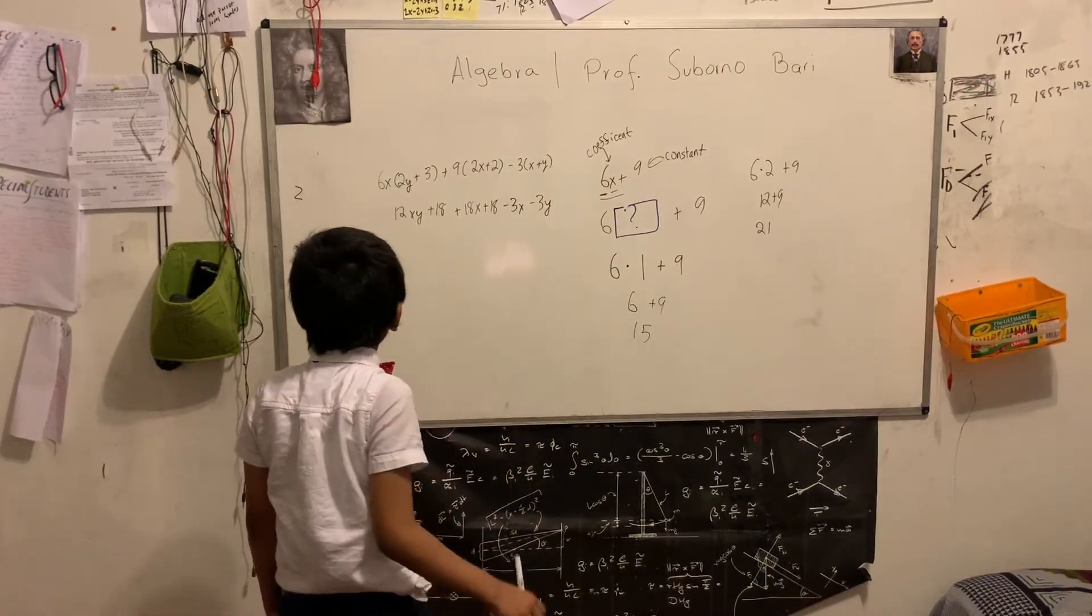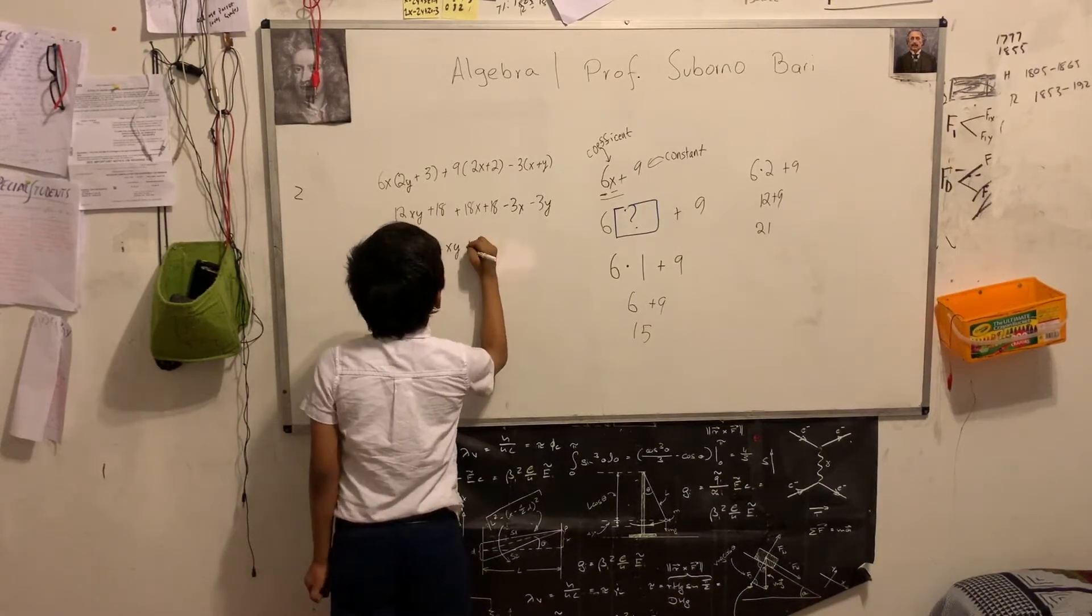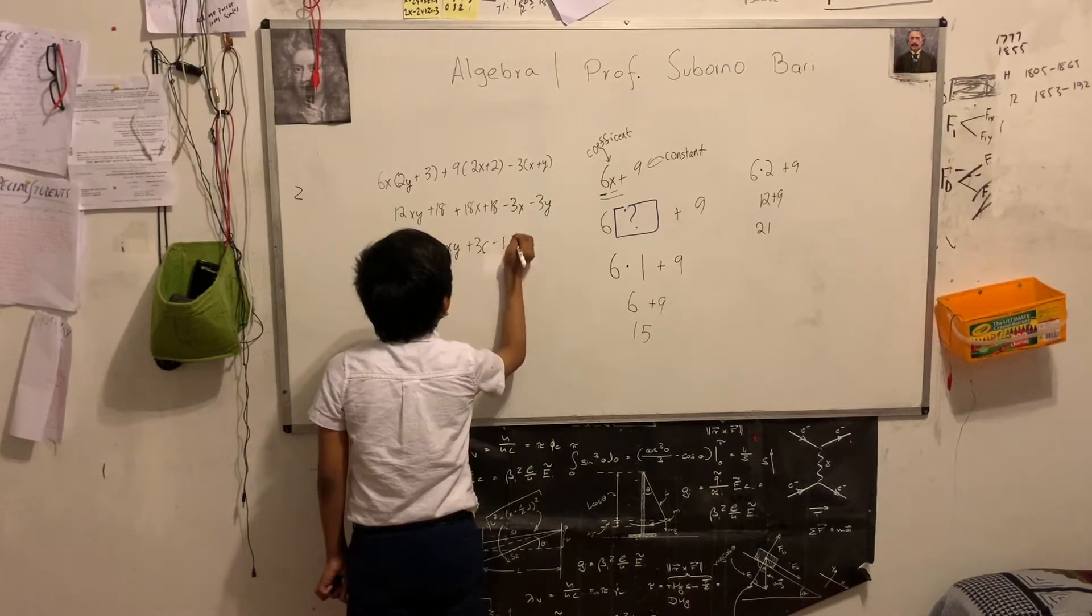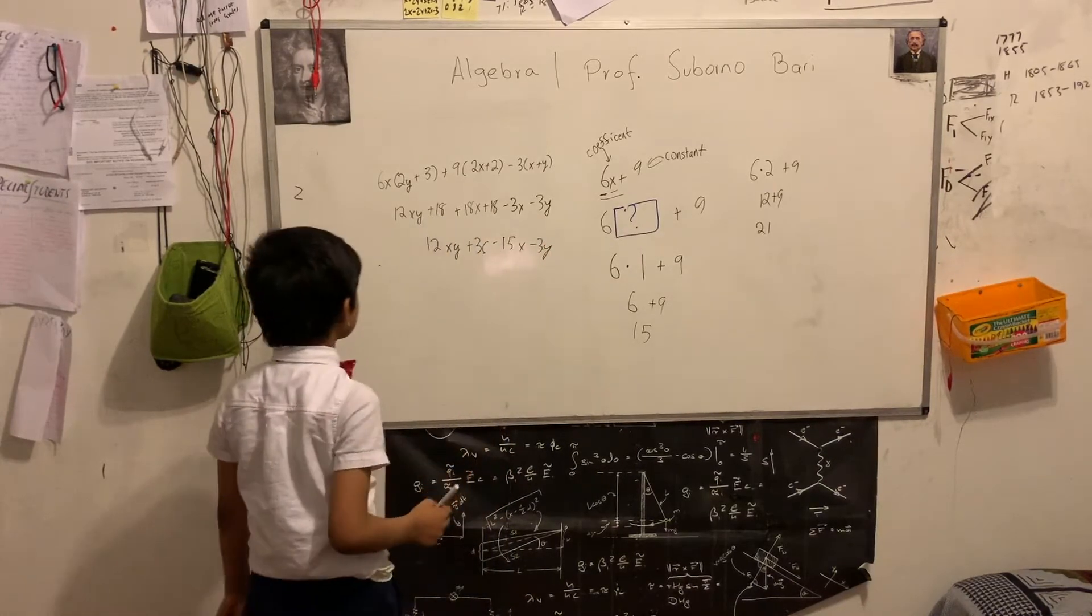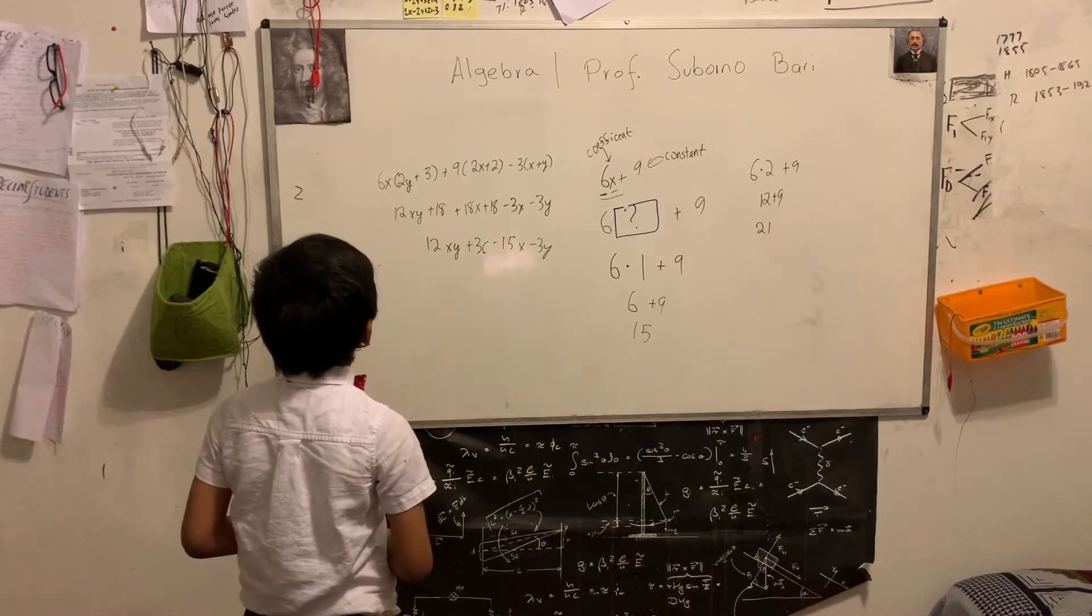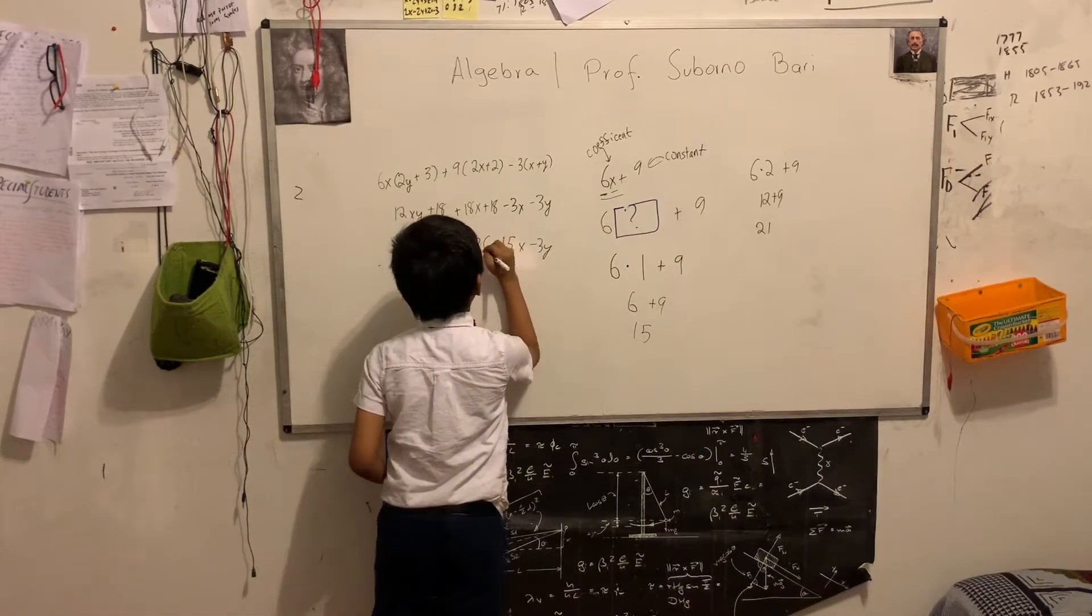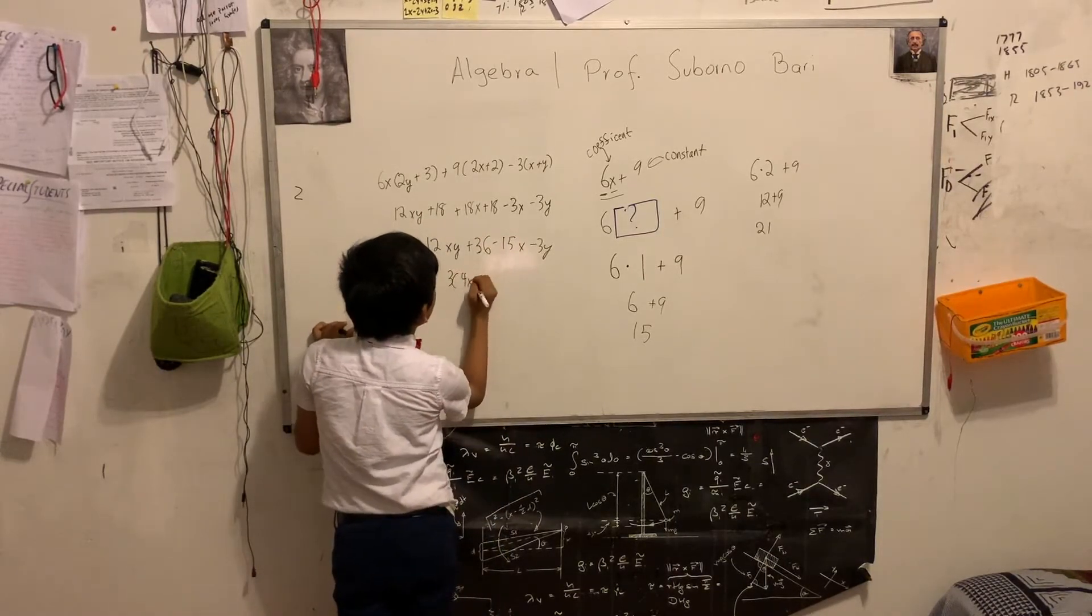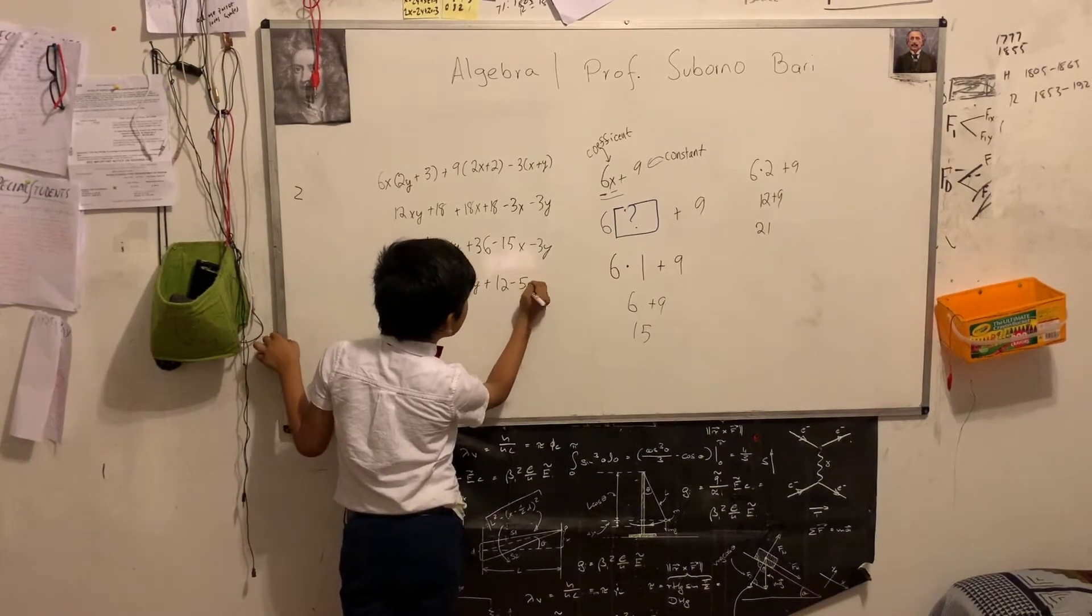Now, let's simplify everything. So 12xy plus 18x plus 18 plus 36 minus 3x is going to be minus 15x. And then minus 3y. 12xy plus 36. And, if you notice, we can actually factor it by 3 to get the expression 4xy plus 12 minus 5x minus y.